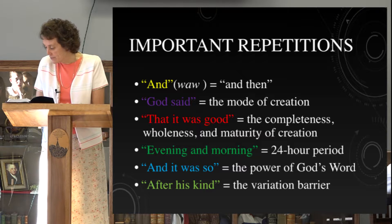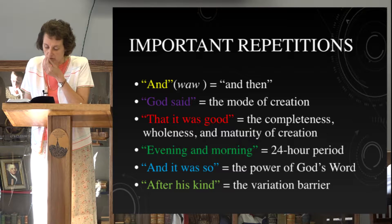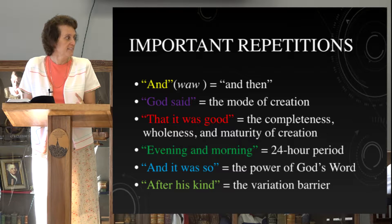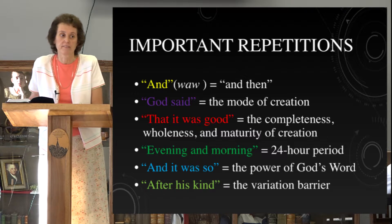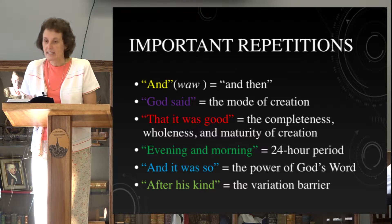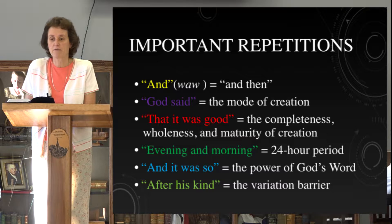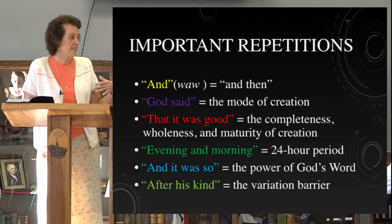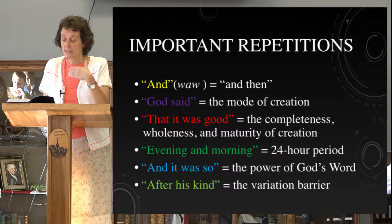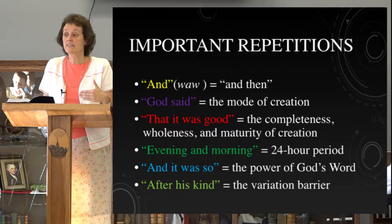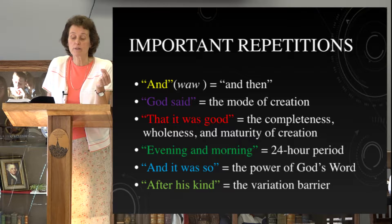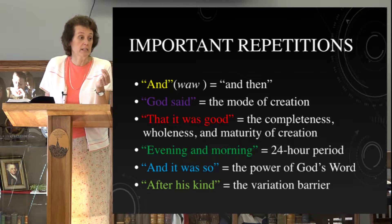Another phrase you'll see repeated is 'God saw that it was good' — found towards the end of every day. This has the idea not only of goodness, but also wholeness, completeness, and maturity. And then 'evening and morning' — what's the significance of this repetition? At the end of every day we see 'the evening and the morning were the first day,' 'the second day,' and so on. It's a solar day. If you look back in your notes, you should have three reasons why this is Hebrew prose, not poetry.